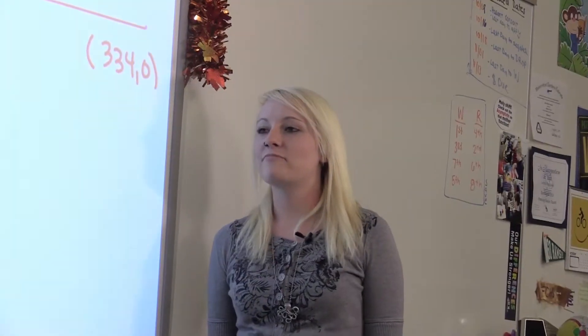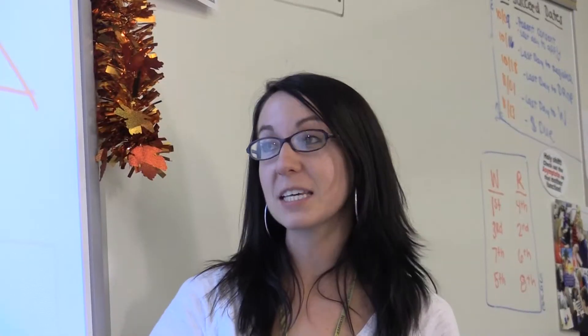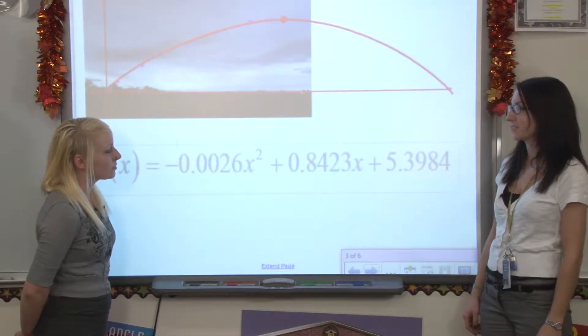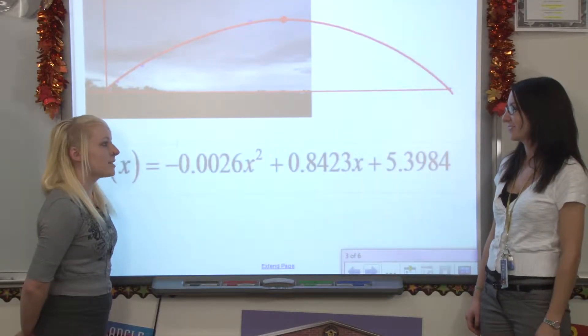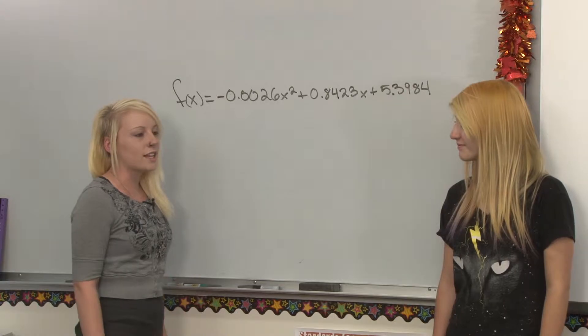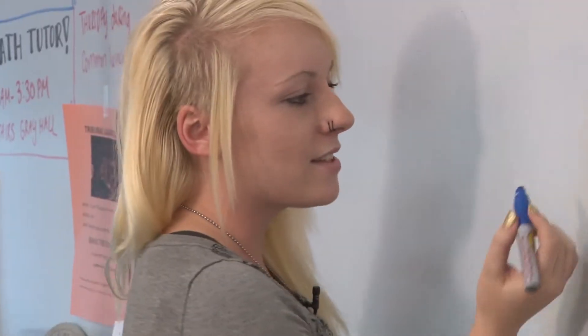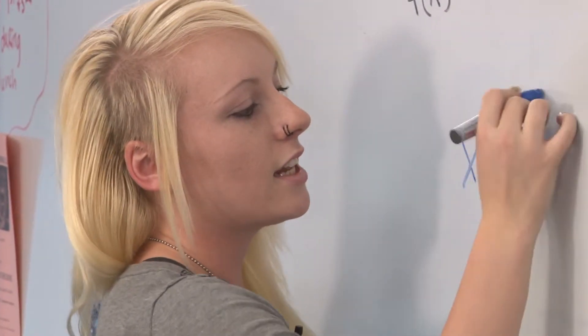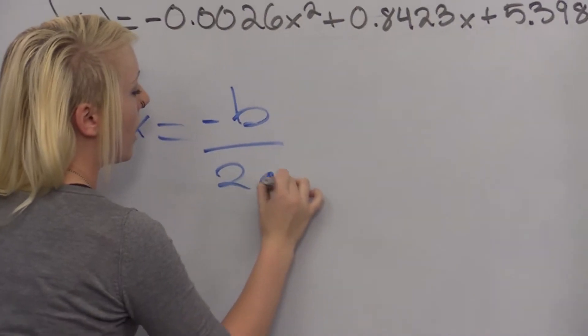Sounds great! Based on the data you found, I was able to create a quadratic regression that models the height your corn travels. Now we can take what we learned in math class to help us figure out what the maximum height is. The maximum height of the corn will be at the vertex of the parabola. By finding the axis of symmetry, we can find the x coordinate of the vertex. The axis of symmetry is located at x equals negative b over 2a.